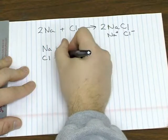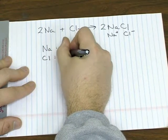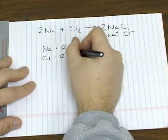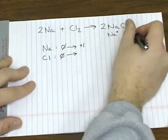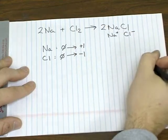Chlorine, likewise, is going from being in its elemental state. It's diatomic but it's still the element chlorine. So it's going from having no charge to forming a chloride ion with a negative one charge.